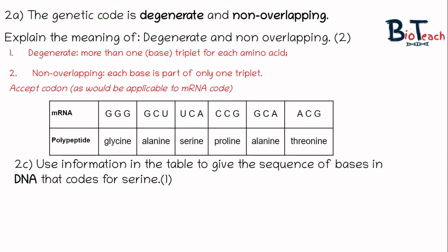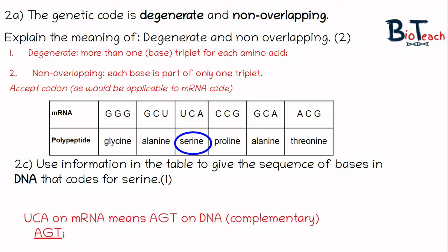Question 2c gives you a table like you see on the screen now and asks you to use the information to give the sequence of bases in DNA that codes for serine. First, identify where serine is on the table and then look at the mRNA code. If on the mRNA it's UCA, we know that DNA has to be the complementary bases, so the answer must be AGT. Remember that uracil replaces thymine on the mRNA strand.